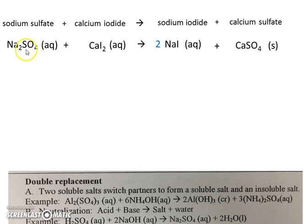So what does it mean if a salt has AQ written after it? Well, you'll recall that that means that the salt is soluble and that it dissolves in water. And you know that when a salt dissolves in water, that it splits up. So for example, sodium sulfate, when it dissolves in water, will split up into sodium and sulfate.